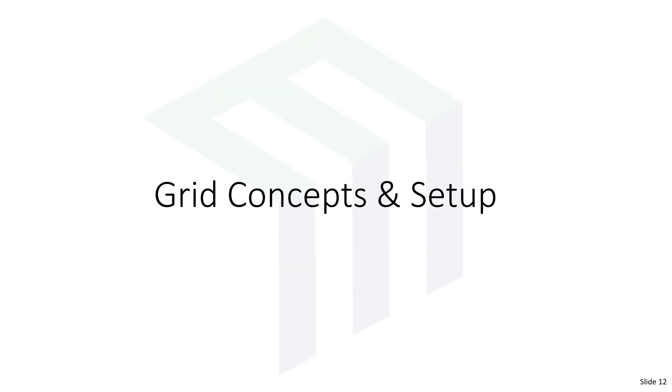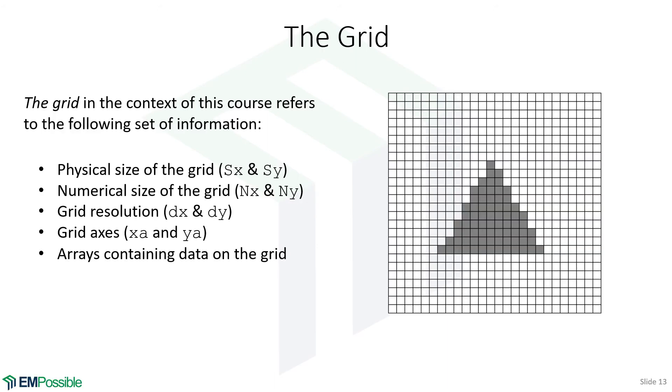When we talk about the grid, what does the grid mean? Really, the grid is a whole set of information. It's all of the grid parameters like the physical size of the grid, maybe two inches by three inches. The numerical size of the grid, that is how many cells wide, how many cells tall, like 200 cells by 300 cells. It's the grid axis telling us the position of the cells on the grid. It's the arrays that contain the data. So the grid is really all of that.